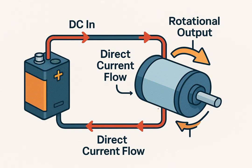A DC motor, or direct current motor, is an electromechanical device that converts direct electrical energy into rotational mechanical motion. At its core, it works based on a simple but powerful principle. When an electric current flows through a conductor placed in a magnetic field, it experiences a force—this is called the Lorentz force.